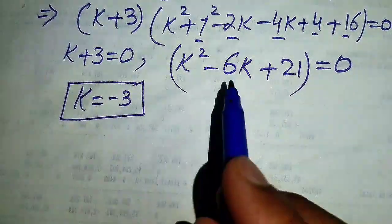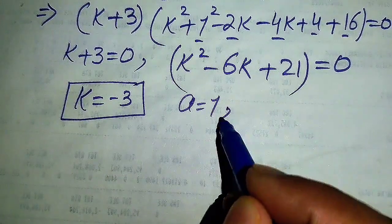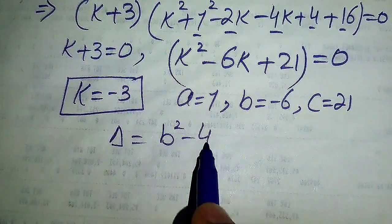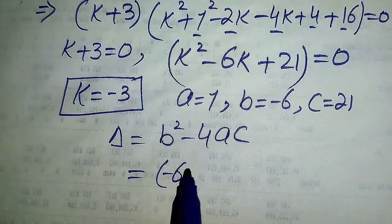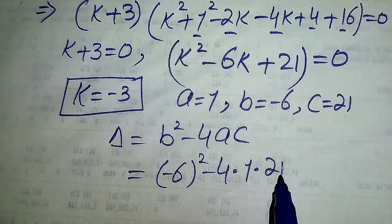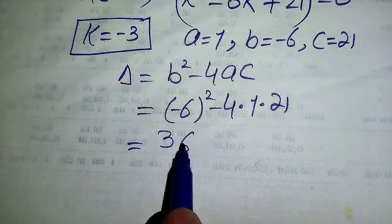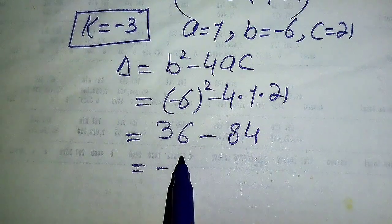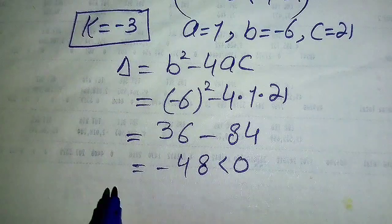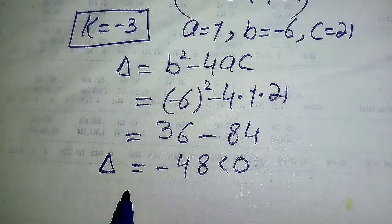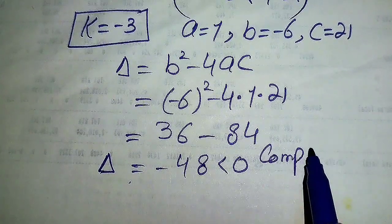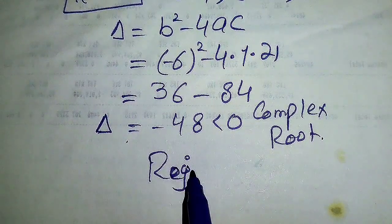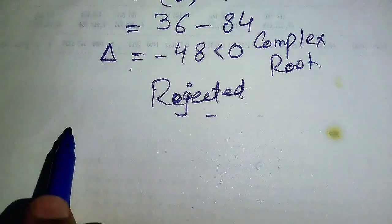The coefficients are a = 1, b = -6, c = 21. Using the discriminant: Δ = (-6)² - 4(1)(21) = 36 - 84 = -48. Since Δ < 0, this equation does not have real roots — it has complex roots. So we reject this case as well.